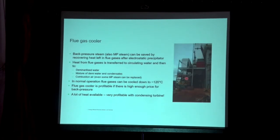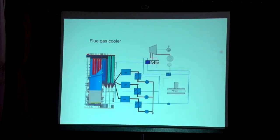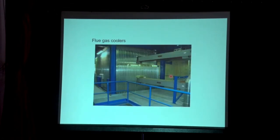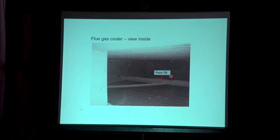For flue gas coolers, they are installed after the electrostatic precipitator at the outlet. Circulation water is heated by the flue gas, and that water is used to heat demi-water and combustion air. Rack-type tube blowers are used for cleaning the flue gas cooler.